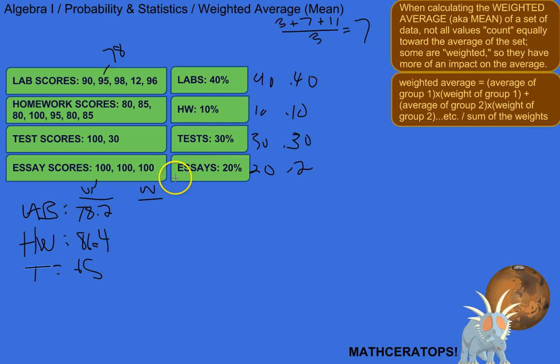Hopefully, labs will kind of bring that grade up, right? Because they count for more. And then essays, oh, 100, 100, 100, that's 100 plus 100 plus 100 is 300, divided by 3 is 100, which you probably could have figured, right? So yeah, unweighted average of essays is 100.